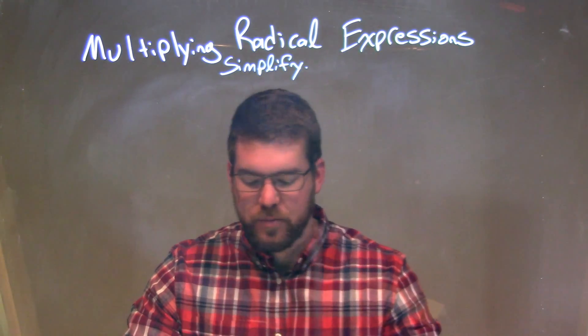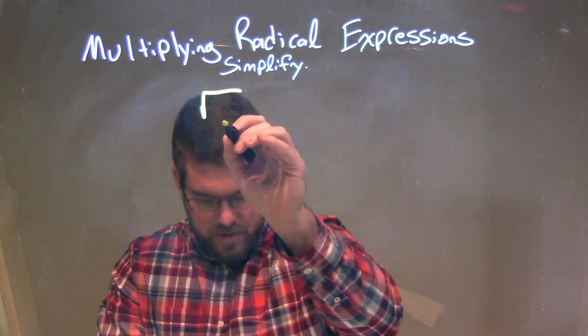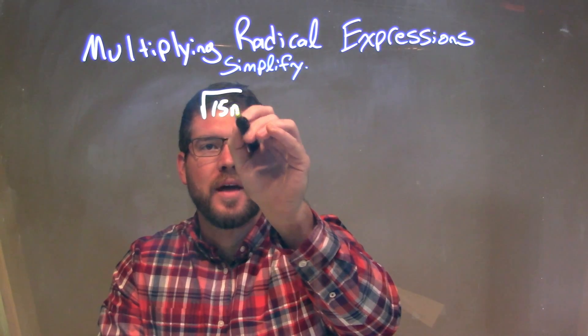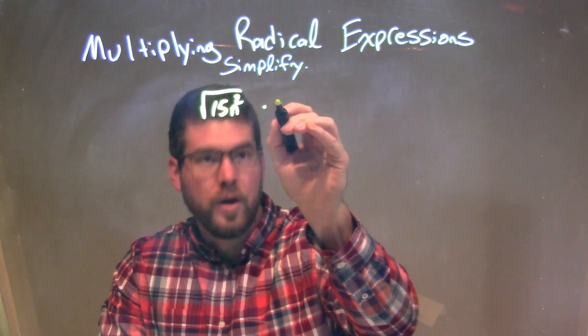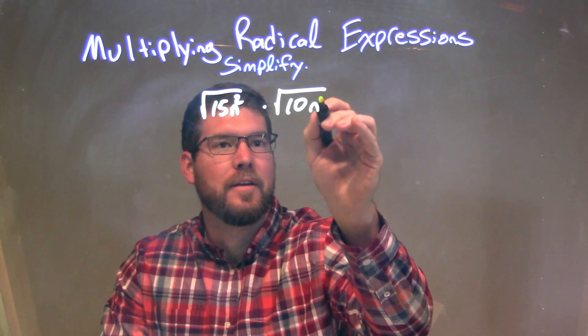So if I was given this expression, square root of 15n squared times square root of 10n to the third.